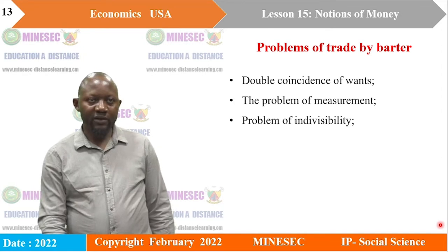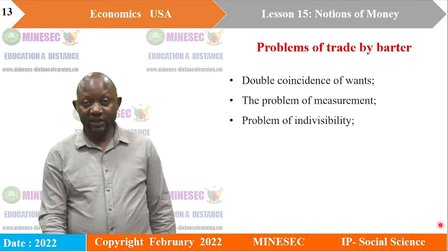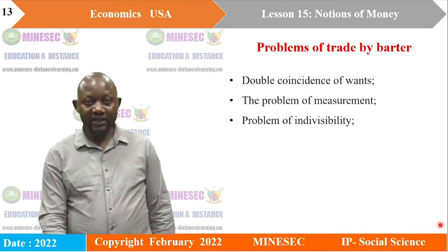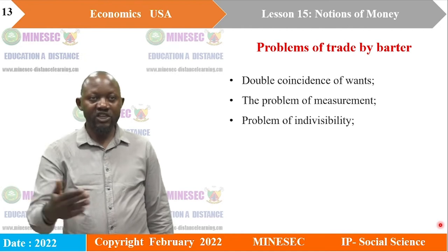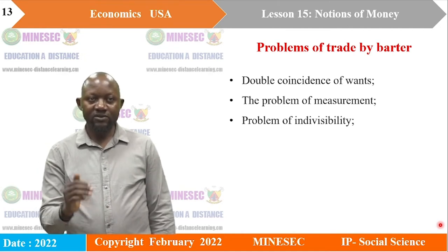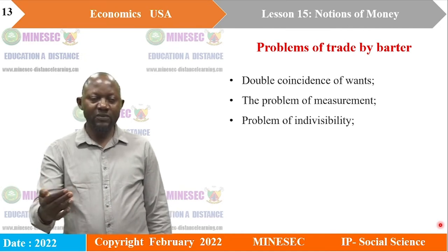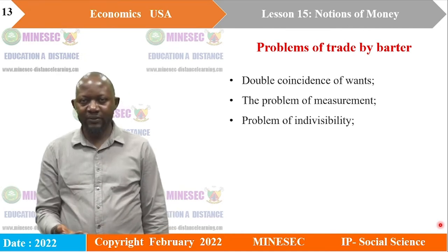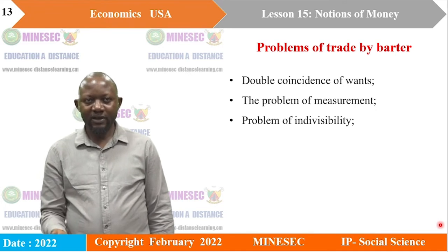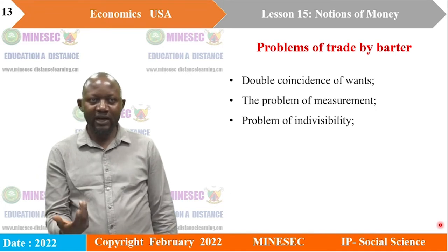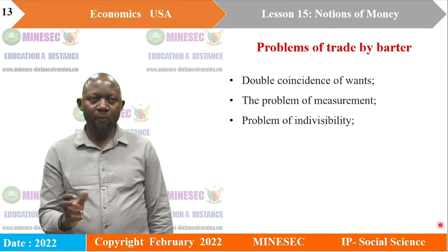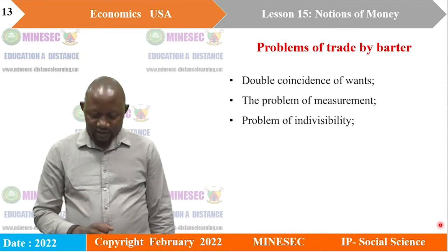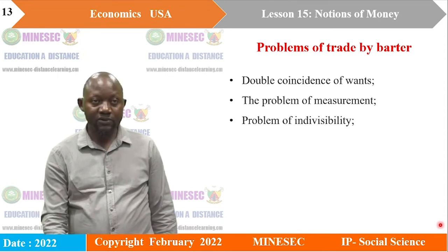We equally had the problem of indivisibility. There were items that could not be divided into smaller units to permit exchange at smaller values. For instance, an exchange involving a cow was very difficult because a cow is useful as a whole. So that was a very serious problem as well.